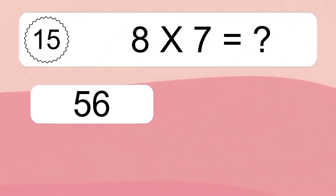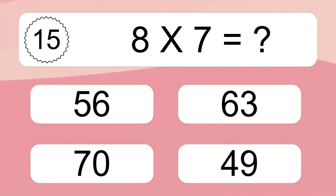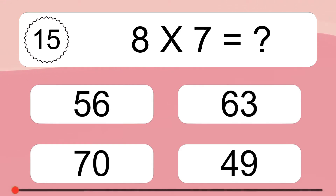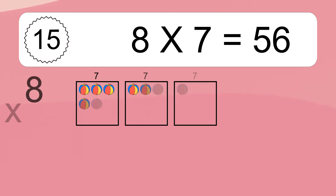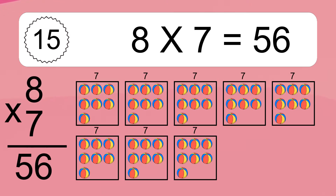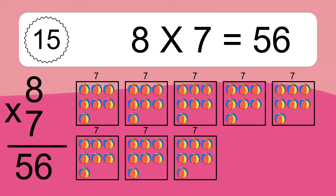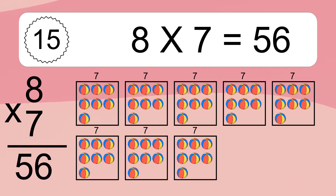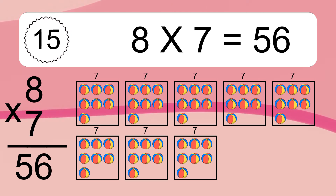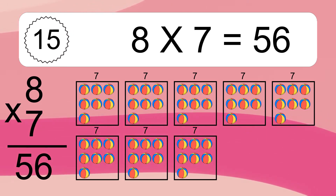8 times 7 equals what? 8 times 7 equals 56. We have 8 boxes and each box has 7 colorful balls inside. If you count all the balls in all the boxes together, you will have 8 times 7 balls. This equals 56 balls.